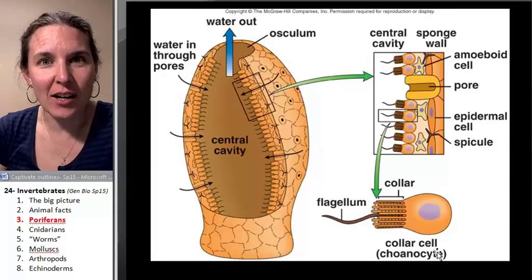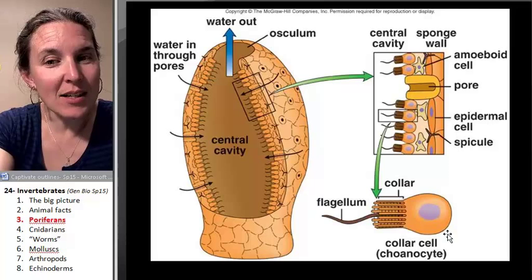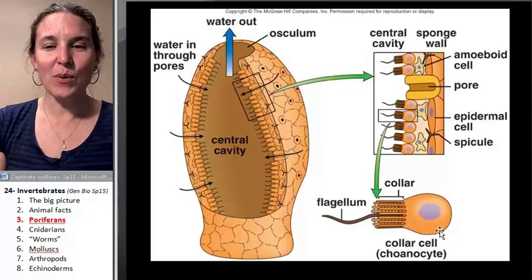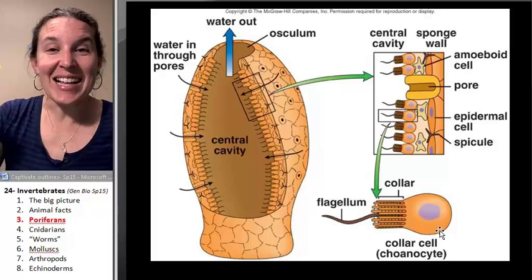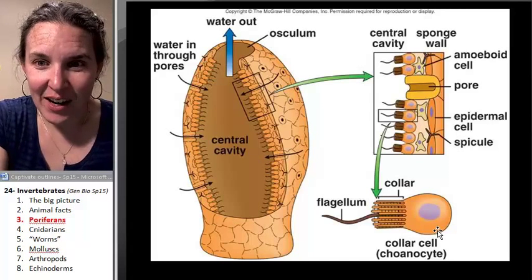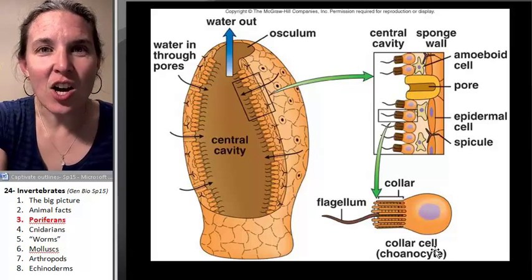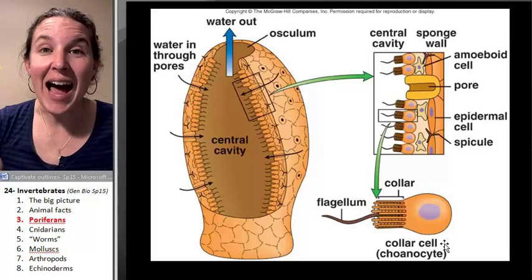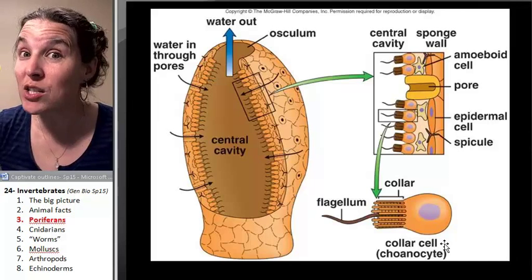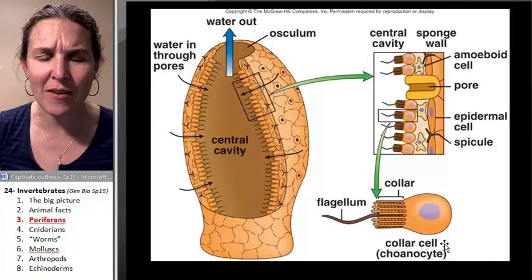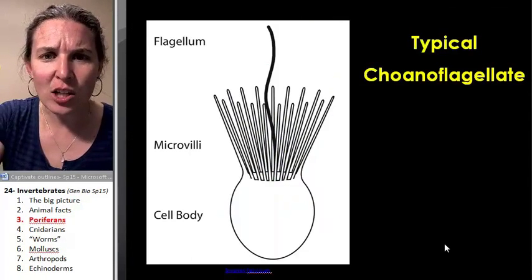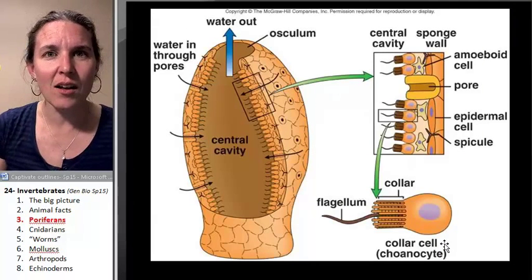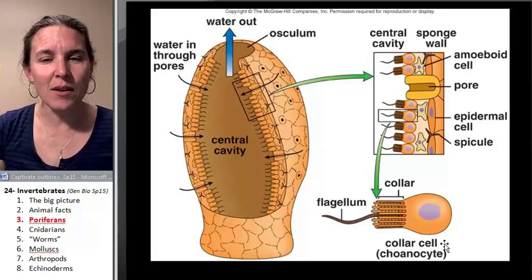Take a look. Does this look familiar to anyone? That's a choanoflagellate — I'm sorry, look at that. It's the collar cell in a sponge. It's how sponges do their filtering. Sponges are filter feeders just like choanoflagellates. Go back, look at the choanoflagellate; go back, look at the collar cell. They're like identical.